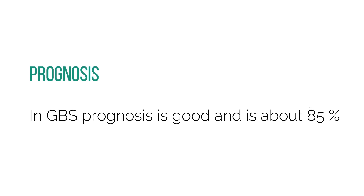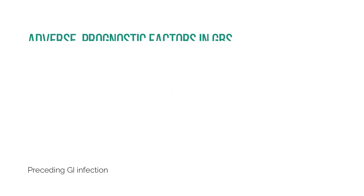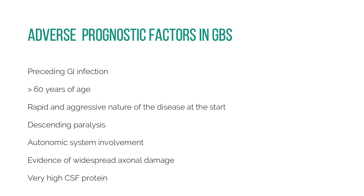In GBS, prognosis is good at about 85 percent. Adverse prognostic factors include preceding GI infection, age greater than 60 years, rapid and aggressive nature of disease at the start, descending paralysis, autonomic nervous system involvement, evidence of widespread axonal damage, and very high CSF protein.